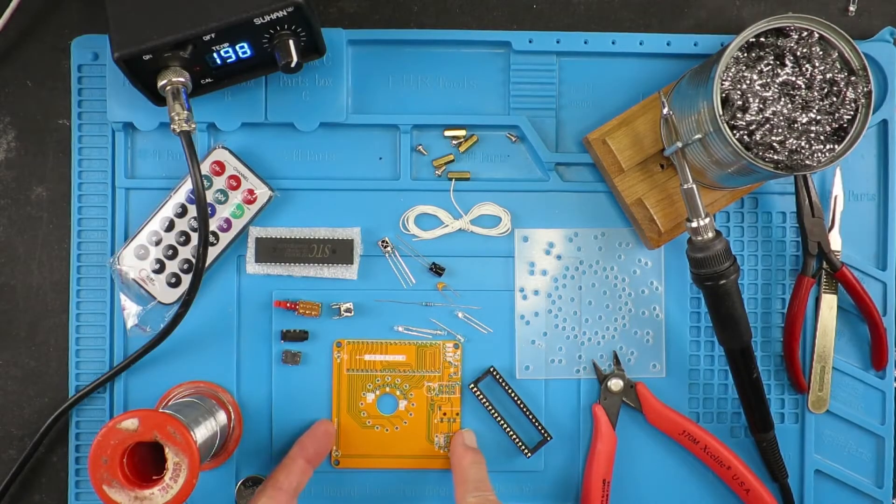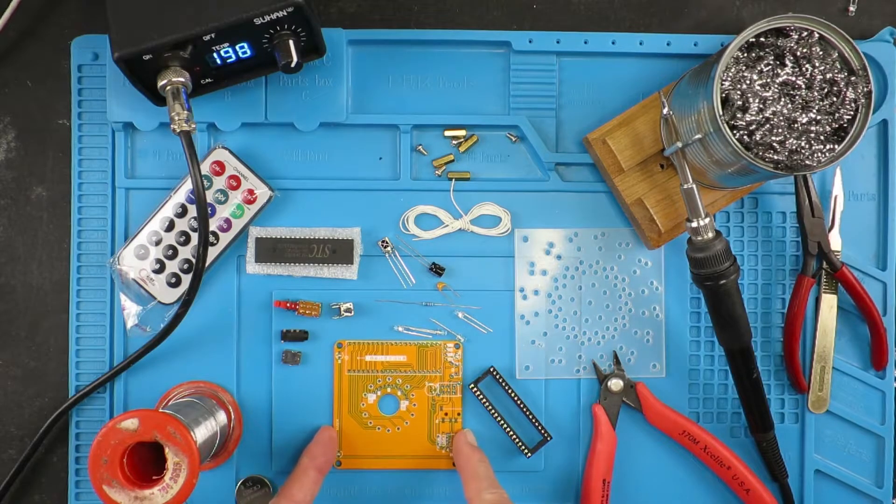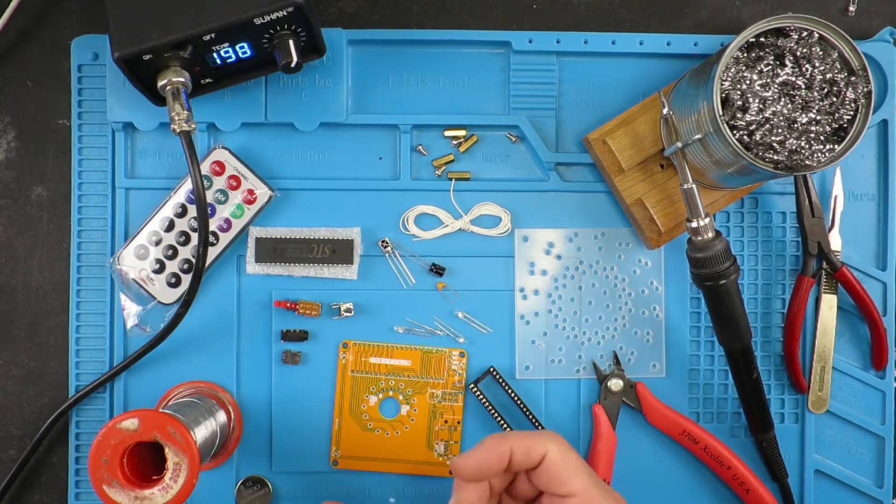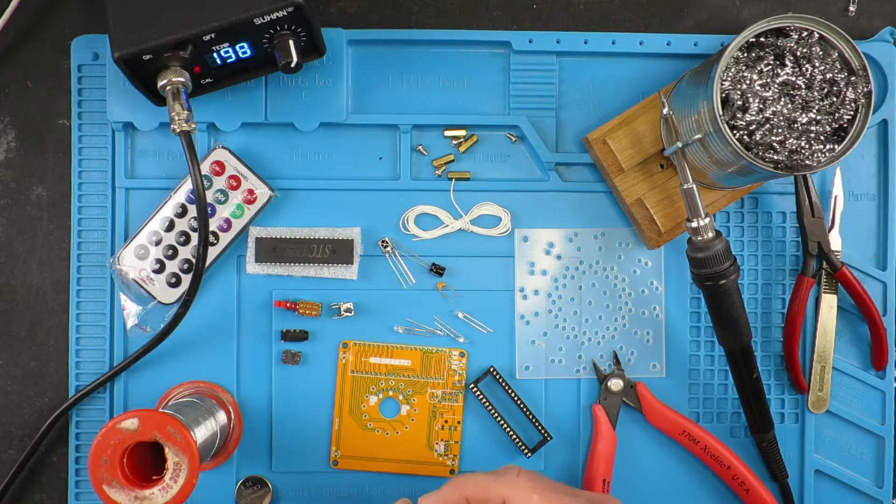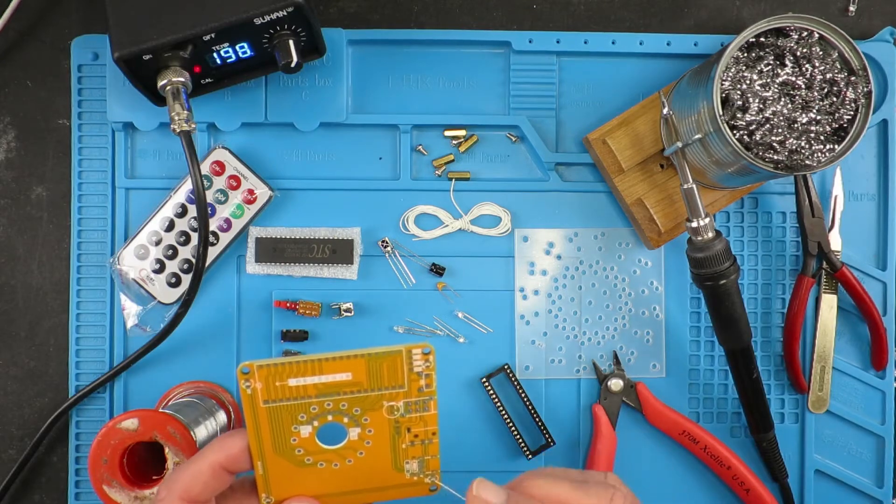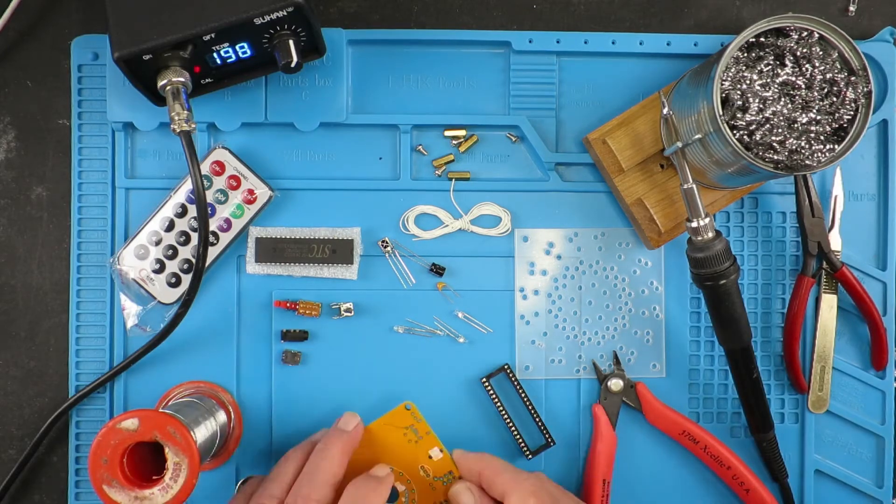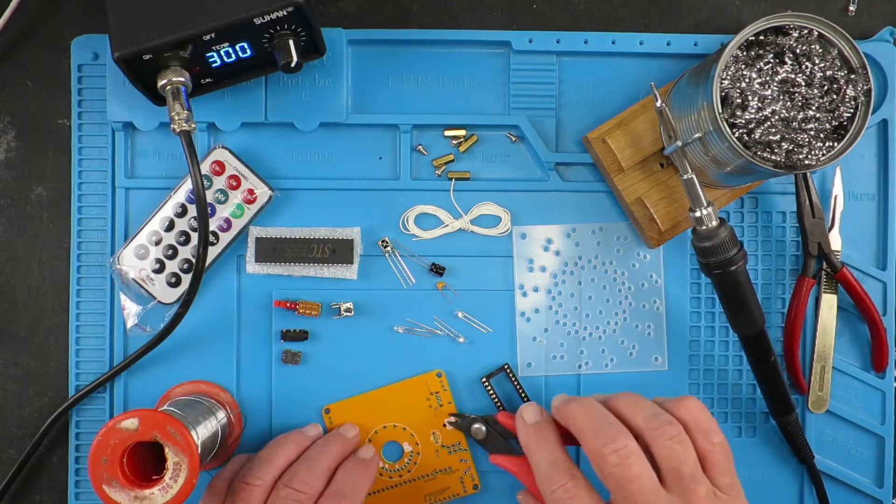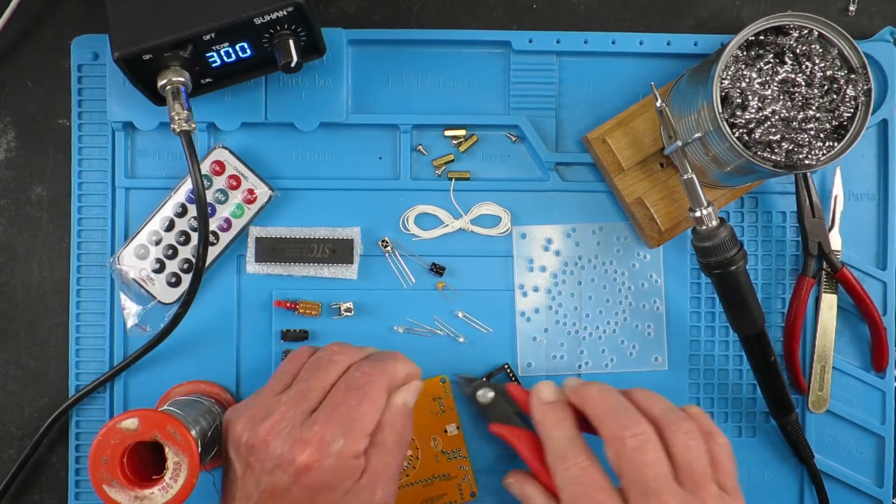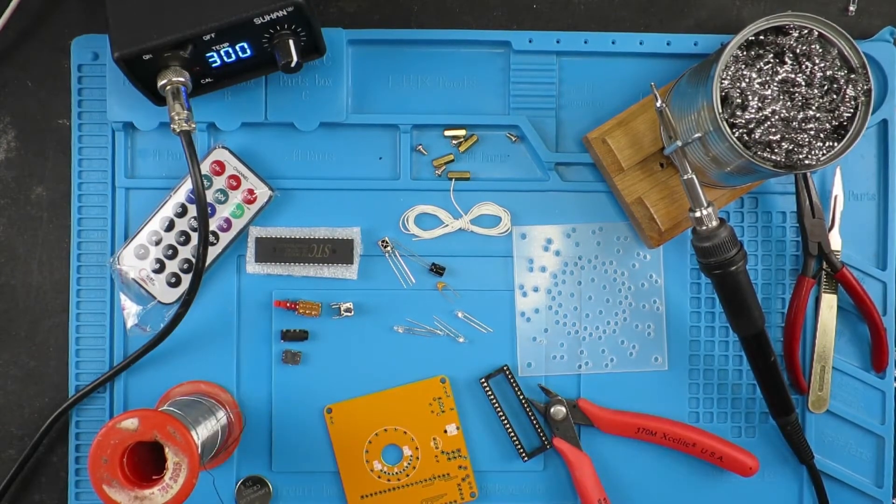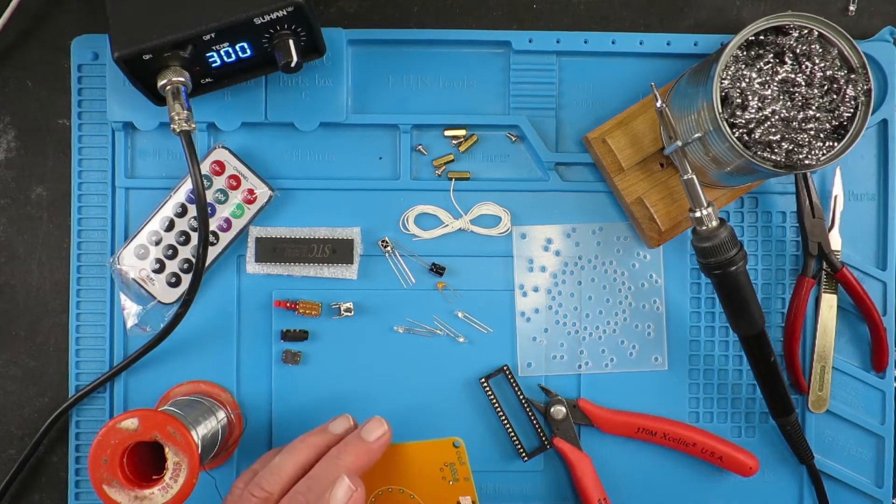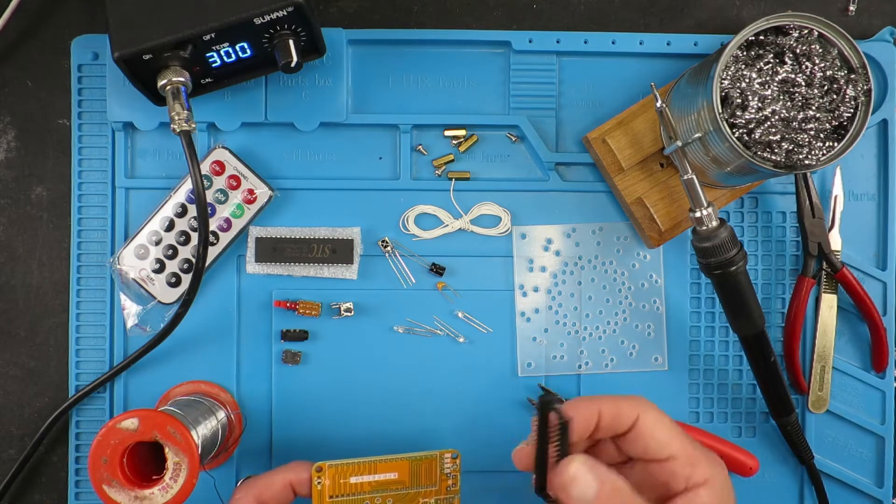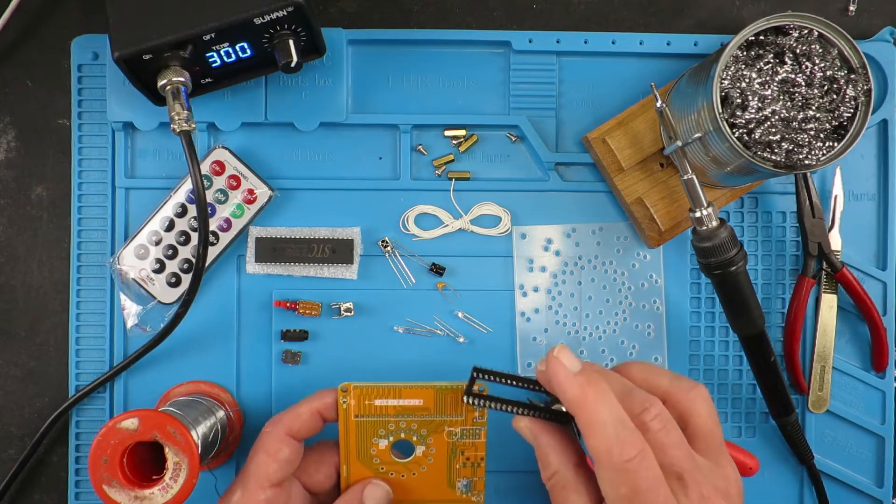Now on with the build. Clearly the first thing is to assemble the circuit itself. I like to follow the rule of using the lowest profile components first, so in this case it's this resistor. Not a good idea to let legs ping around when cutting them off. Always pick them off and dispose of them properly.